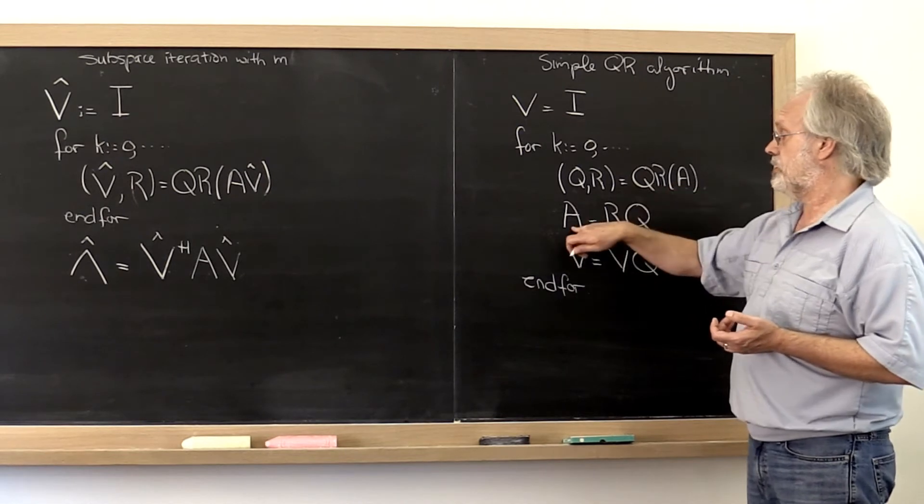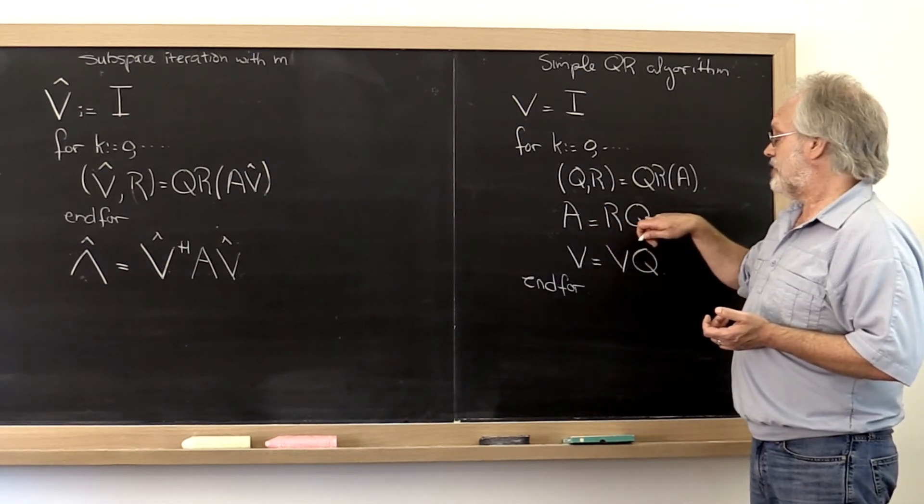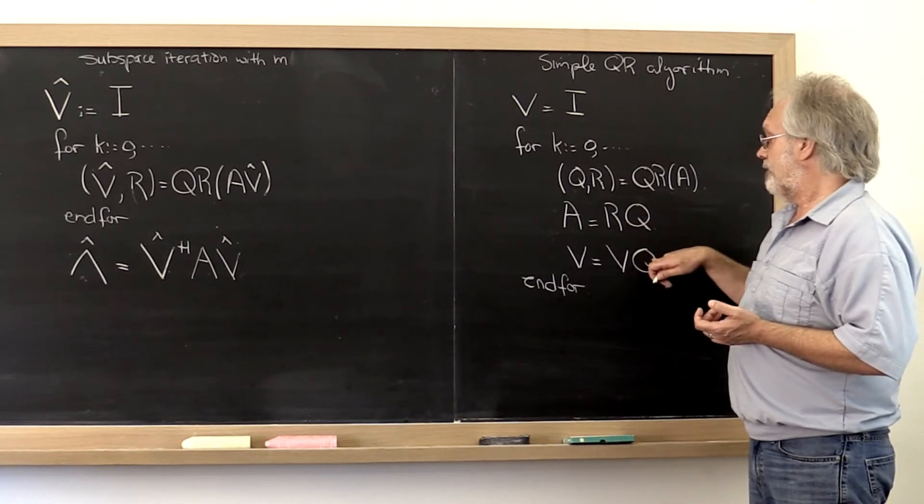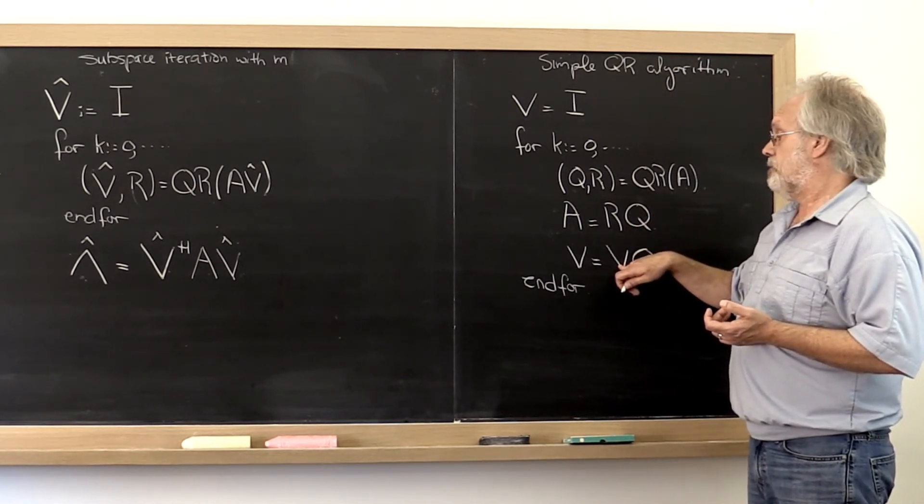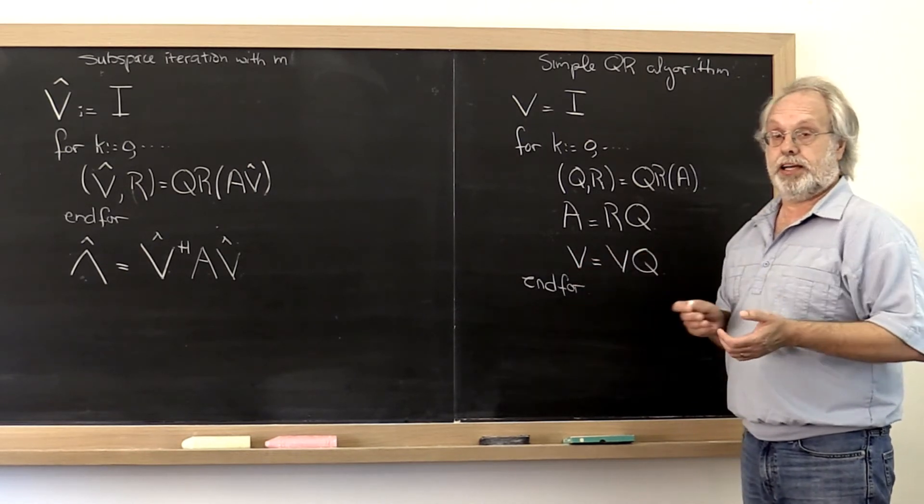This is no longer the same matrix as we started with. And then take this matrix Q and multiply it from the right times our original matrix V, or the V that we're now accumulating, and that becomes our next V.